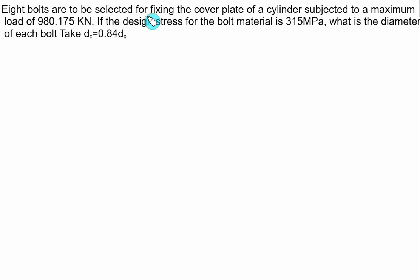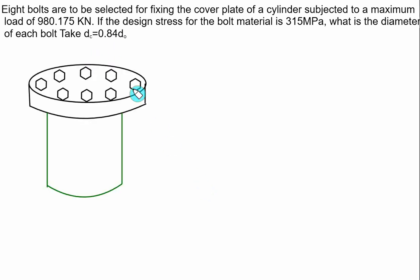Eight bolts are to be selected for fixing the cover plate of a cylinder subjected to a maximum load of 980.175 kN due to internal pressure. The design (allowable) stress for the bolt material is 315 MPa. Find the diameter of each bolt, given core diameter = 0.84 × D0.